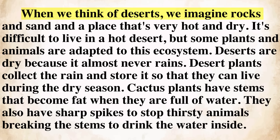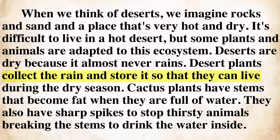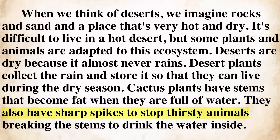Listen and practice. When we think of deserts, we imagine rocks and sand and a place that's very hot and dry. It's difficult to live in a hot desert, but some plants and animals are adapted to this ecosystem. Deserts are dry because it almost never rains. Desert plants collect the rain and store it so that they can live during the dry season. Cactus plants have stems that become fat when they are full of water. They also have sharp spikes to stop thirsty animals breaking the stems to drink the water inside.